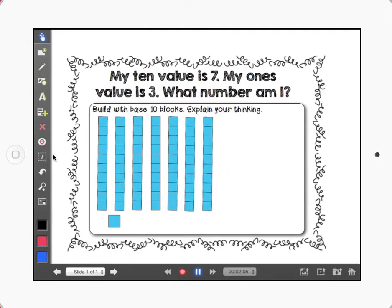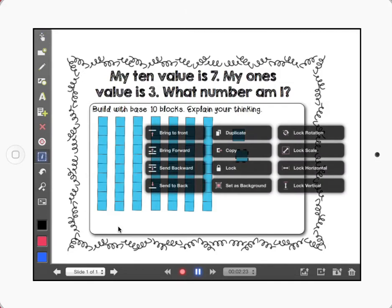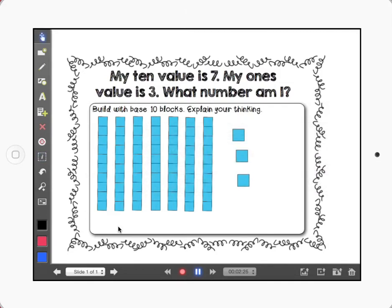Now I need to show that my 1s value is 3. So down here is my unit that I'm going to make. I need 3. I have 1 now. I'm going to click on my eye and duplicate. And I'm going to click on my eye and duplicate again.